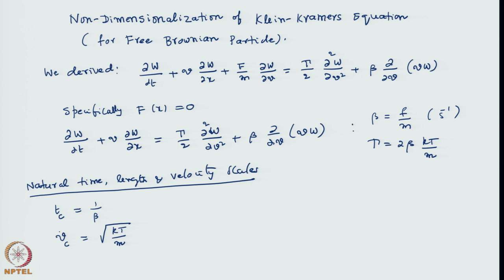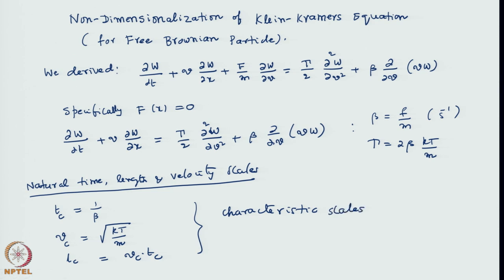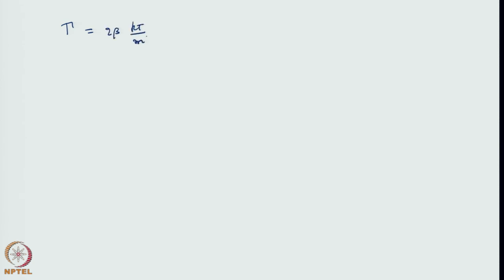Once we have a characteristic time and a characteristic velocity, we can generate a characteristic length. The characteristic length L_c is the product of velocity and time: V_c times T_c, with units of meters per second times seconds, so it is automatically generated. With that we can scale. Gamma can now be expressed as 2 beta kT/M, which equals V_c² / T_c.